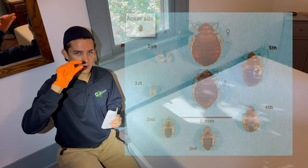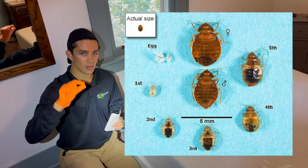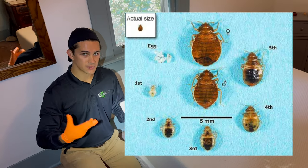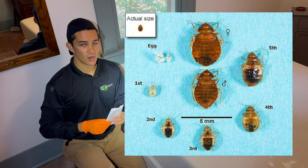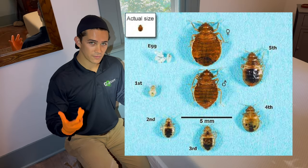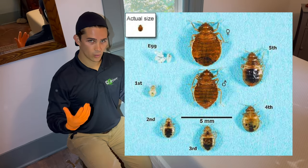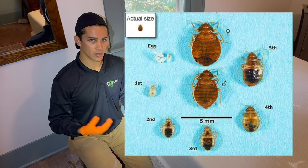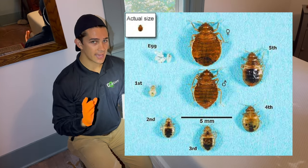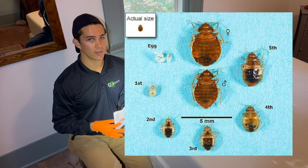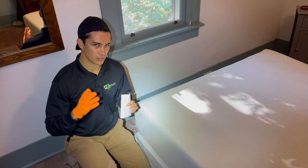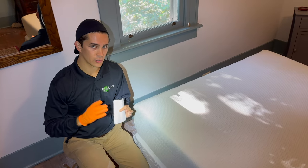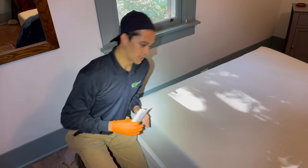The adults are only about a centimeter long. The nymphs and first instars of bed bugs are maybe one fifth that size — one fifth of a centimeter long. The eggs are even smaller than that. So it is very important to have a strong flashlight when you're doing a bed bug inspection.